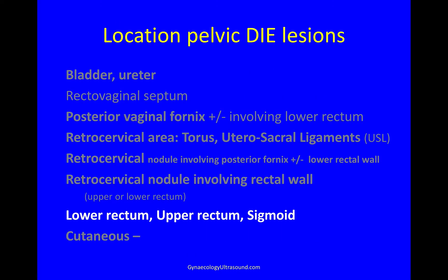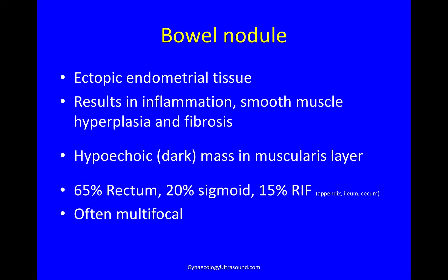Looking for bowel nodules now in the lower rectum, upper rectum and sigmoid. A bowel nodule is ectopic endometrial tissue in the muscularis layer, resulting in inflammation, smooth muscle hyperplasia and fibrosis, and it results in a hypoechoic mass in the muscularis layer. Mostly this is in the rectum, whether upper or lower. 20% of cases are in the sigmoid, 15% in the right iliac fossa — either appendix, ilium or cecum.